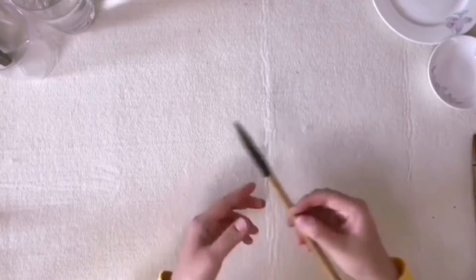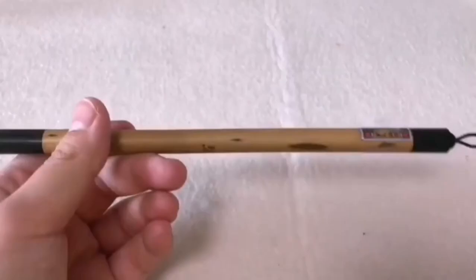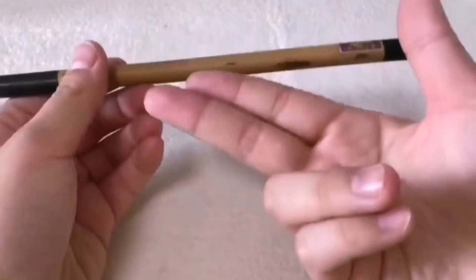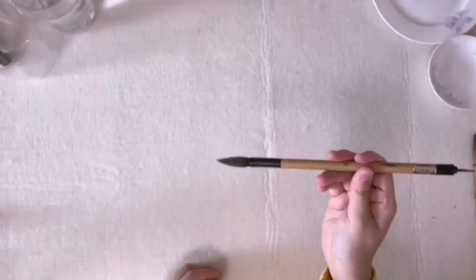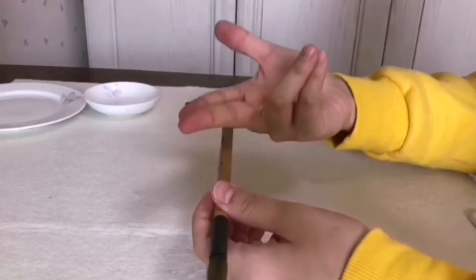To hold a brush, we use the thumb, pointer finger, and middle finger to hold it, and use the other two fingers, ring and pinky finger, to go against the brush to provide additional support. The brush is expected to be perpendicular to the paper. Your wrist is also expected to be held up like this. It is definitely a challenge for beginners.